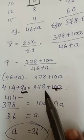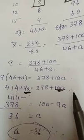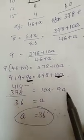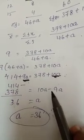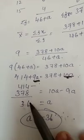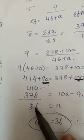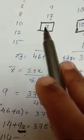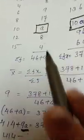9 plus 9 will be moved to that side, then 10a minus 9a, that is a. Take a to the left side, number to the right side. 10a minus 9a is one a, subtracting 36, so a equals 36.